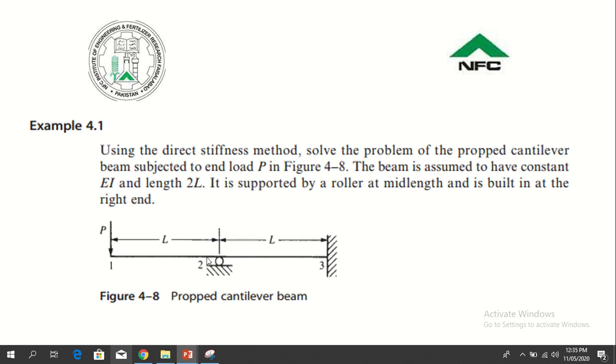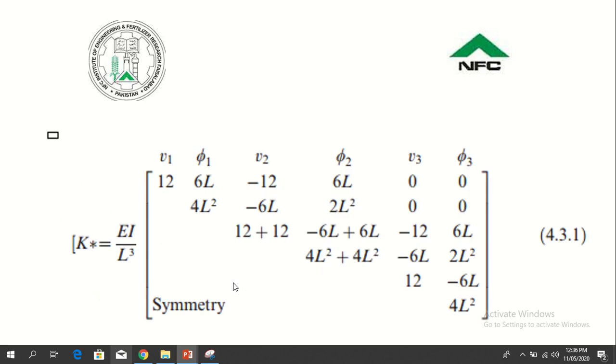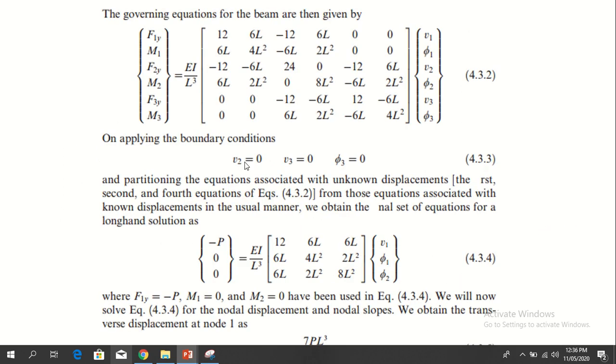At node 2 you can see it cannot move in the vertical direction but it can rotate about point 2, so at point 2 V2 is 0. These are the boundary conditions: V2 equals 0, V3 equals 0, and phi3 equals 0. That means this term is 0, this is 0, and this is 0.